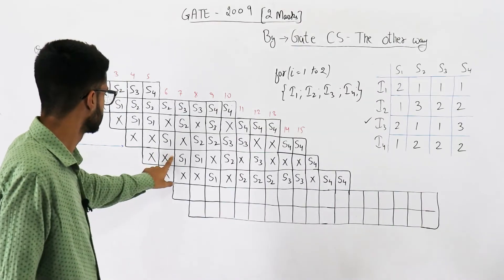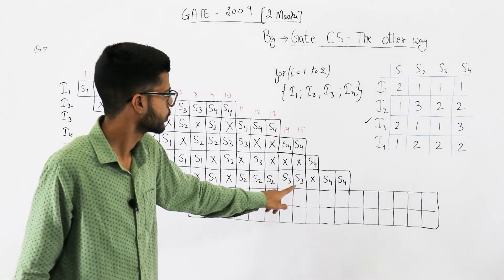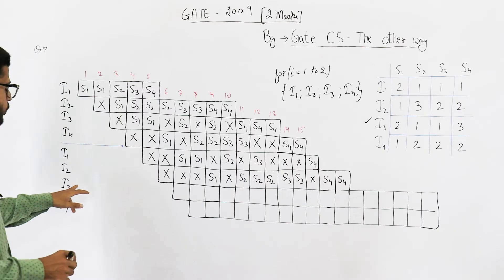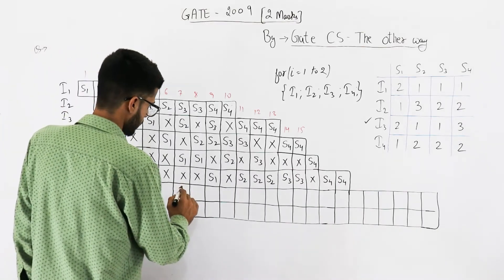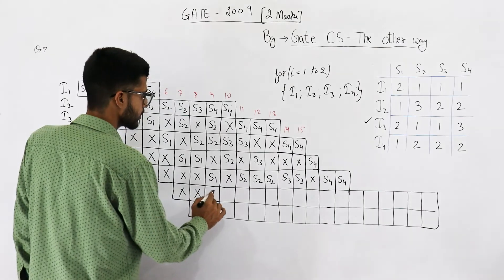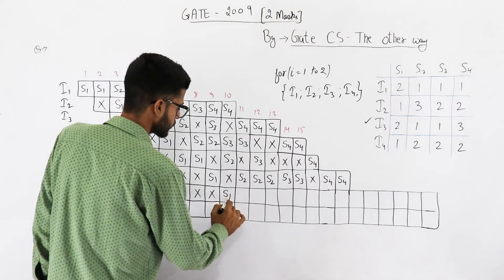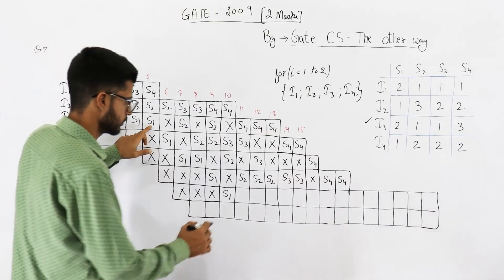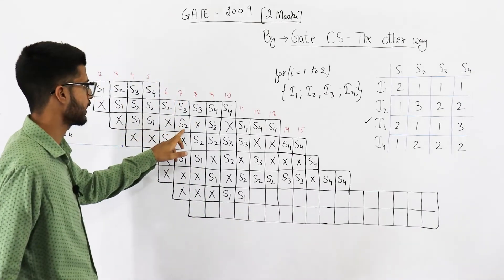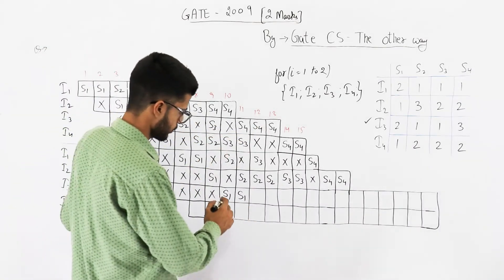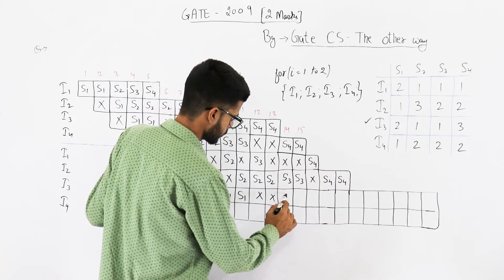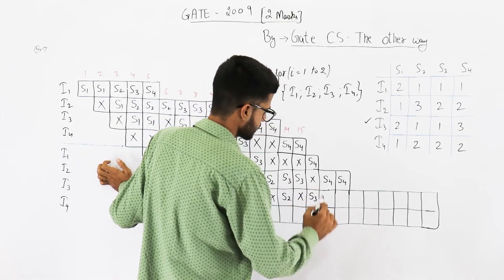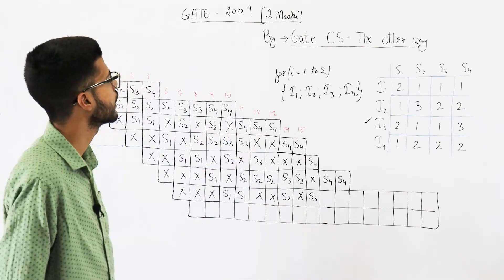Let's move ahead with i3. Instruction number three - s1 can't be placed here, neither it can be placed here nor here. That means s1 is going to come here. Instruction three needs two s1 followed by s2, s3, and three s4s.